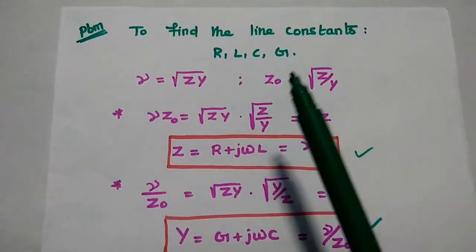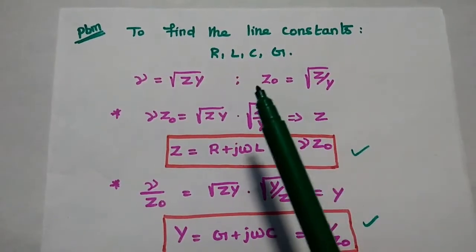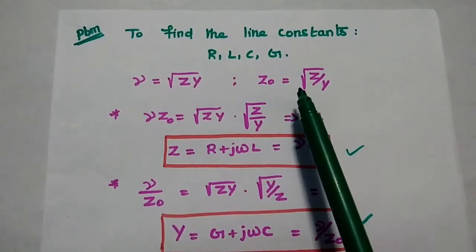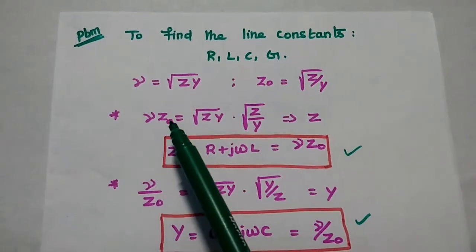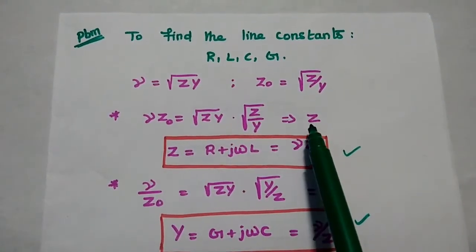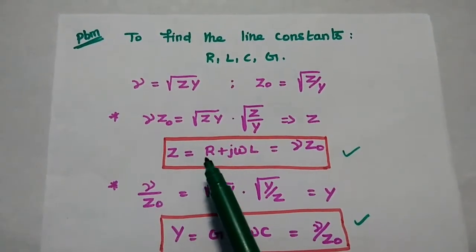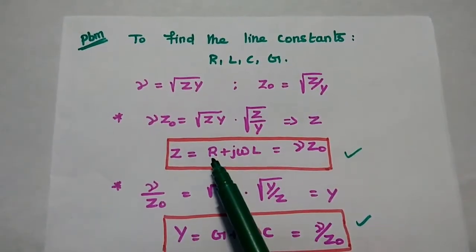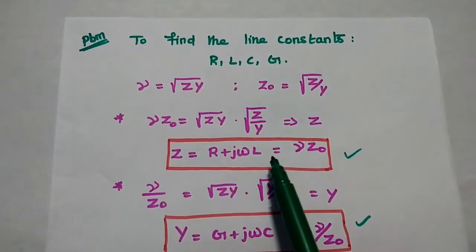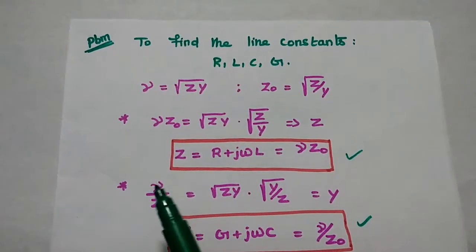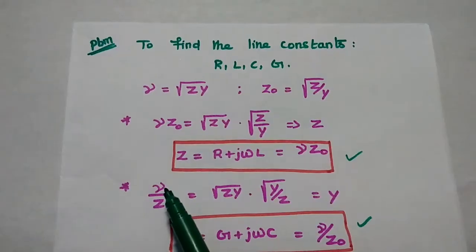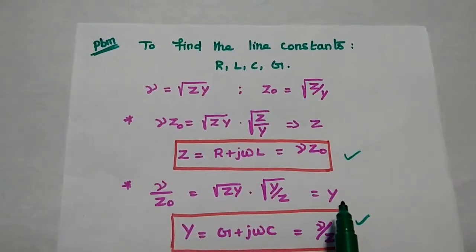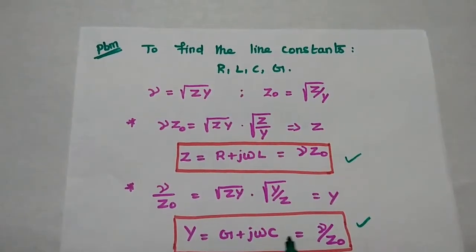We are going to find out the line constants of the transmission line R, L, C and G using propagation constant and the characteristics impedance. By multiplying the propagation constant and characteristics impedance, we can get the value of Z. Z is the series impedance, equal to R plus J omega L. From this we can get the resistance value and inductance value. Next, by dividing the propagation constant by the characteristics impedance, we can get the shunt admittance Y, equal to G plus J omega C.